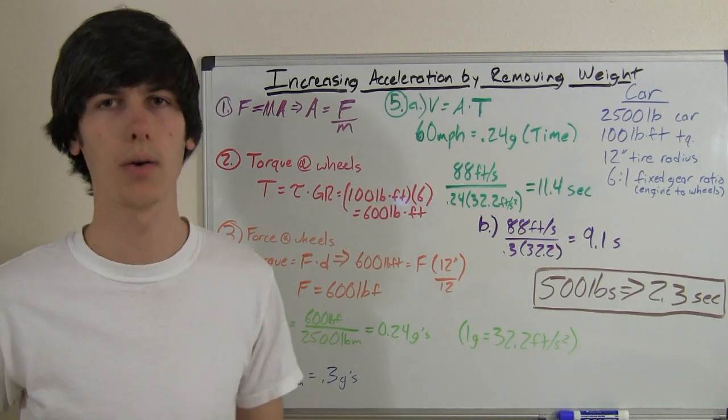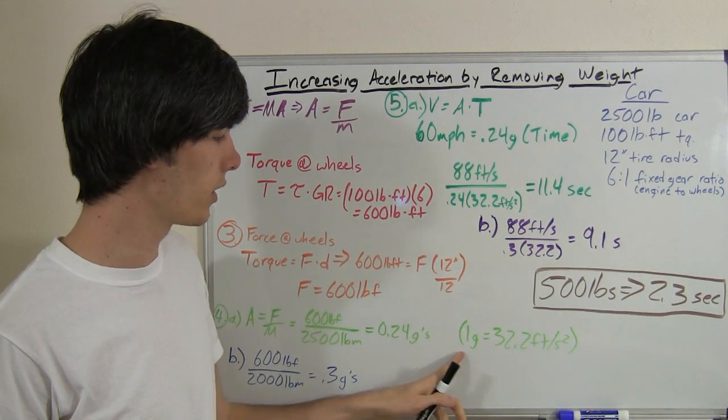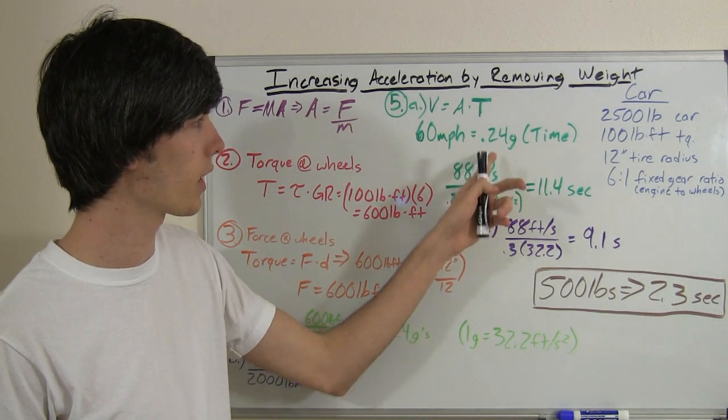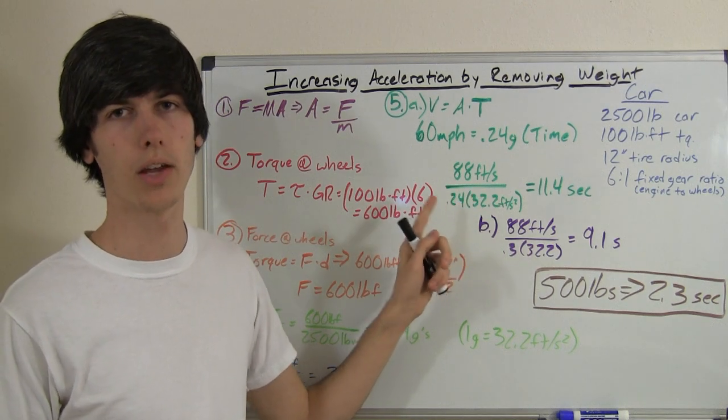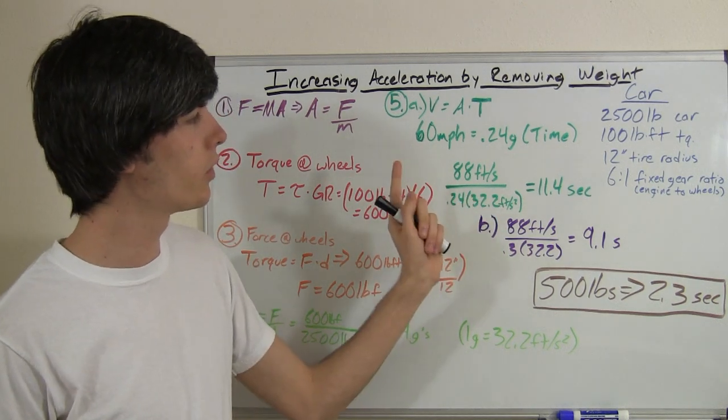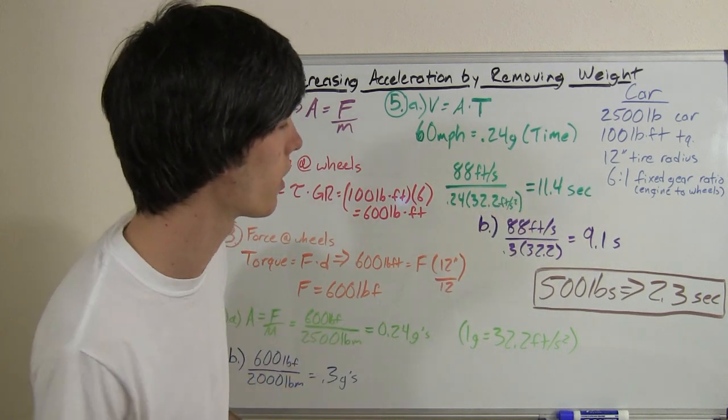So all we need to do is divide our speed by our acceleration, and we can figure out the time. Now 60 miles per hour is equivalent to about 88 feet per second. And as I discussed down here, 1 g is 32.2 feet per second. So divide 88 feet per second by 0.24 times 32.2 feet per second squared, and that gives you a 0 to 60 time of an impressive 11.4 seconds.